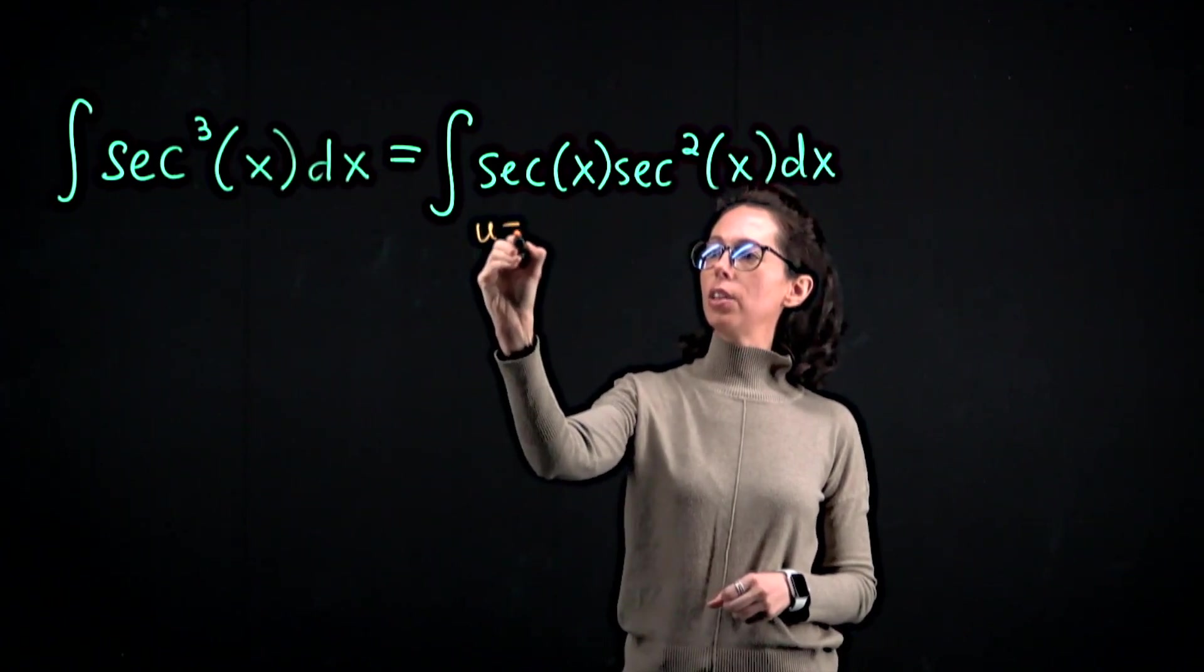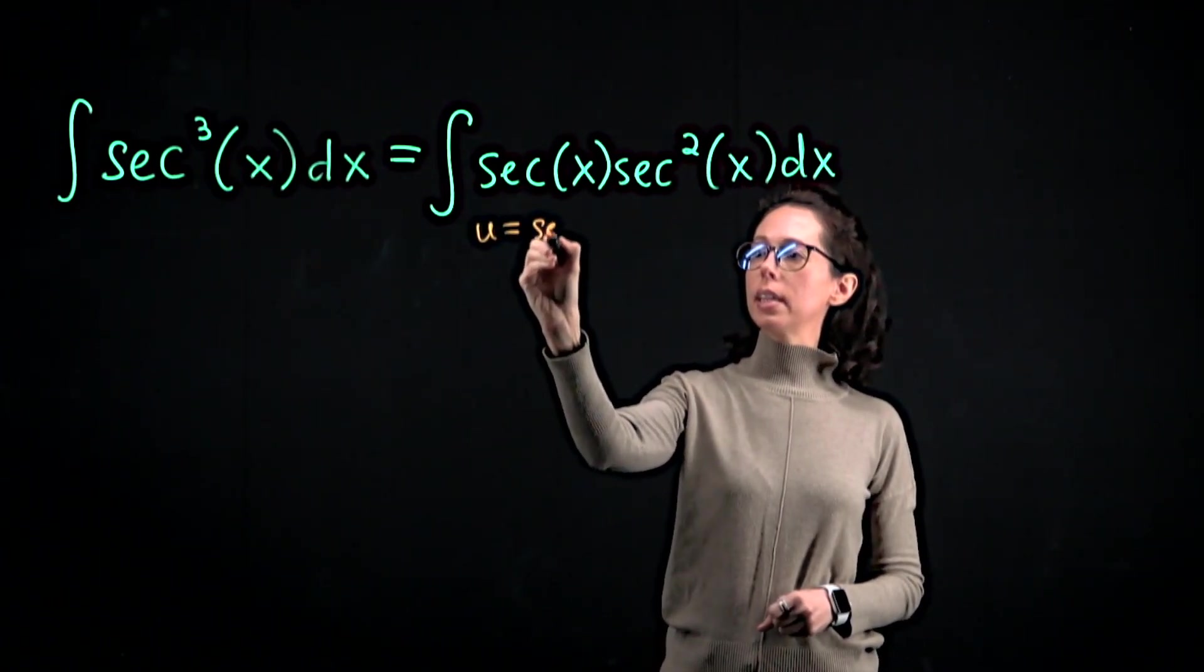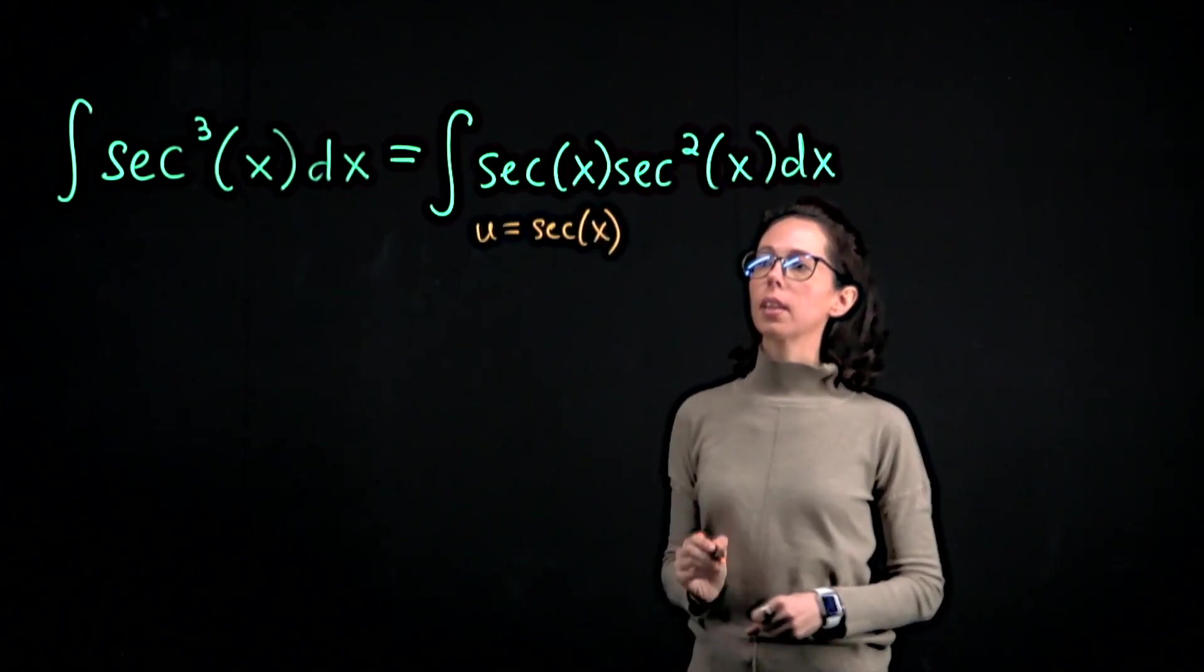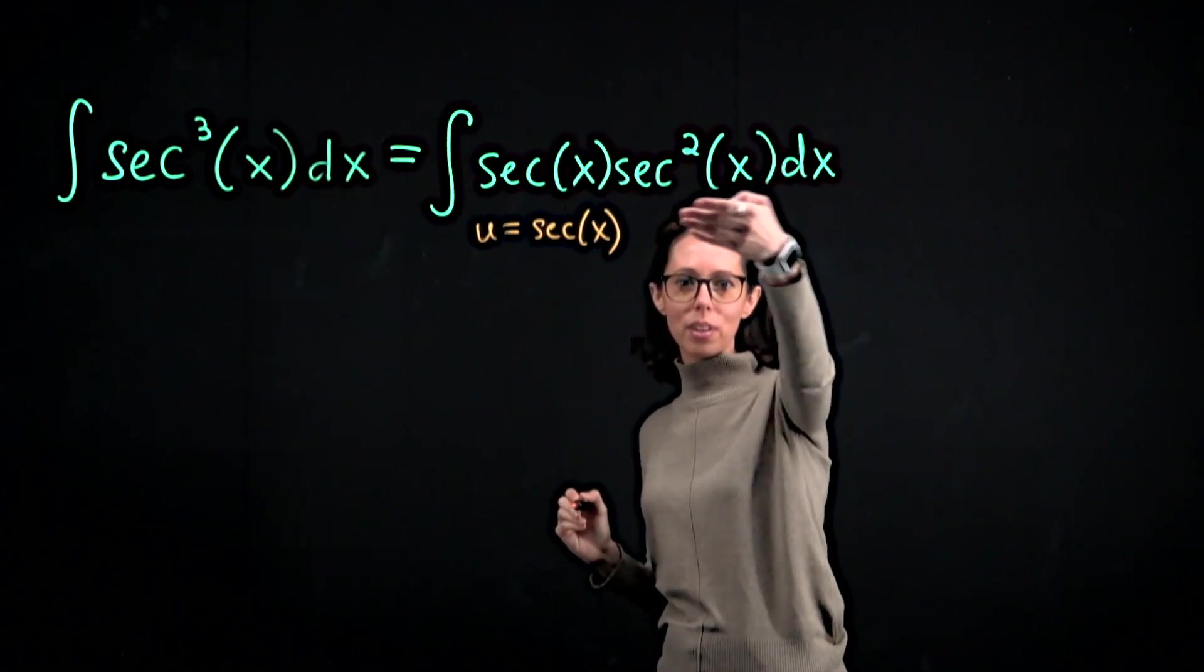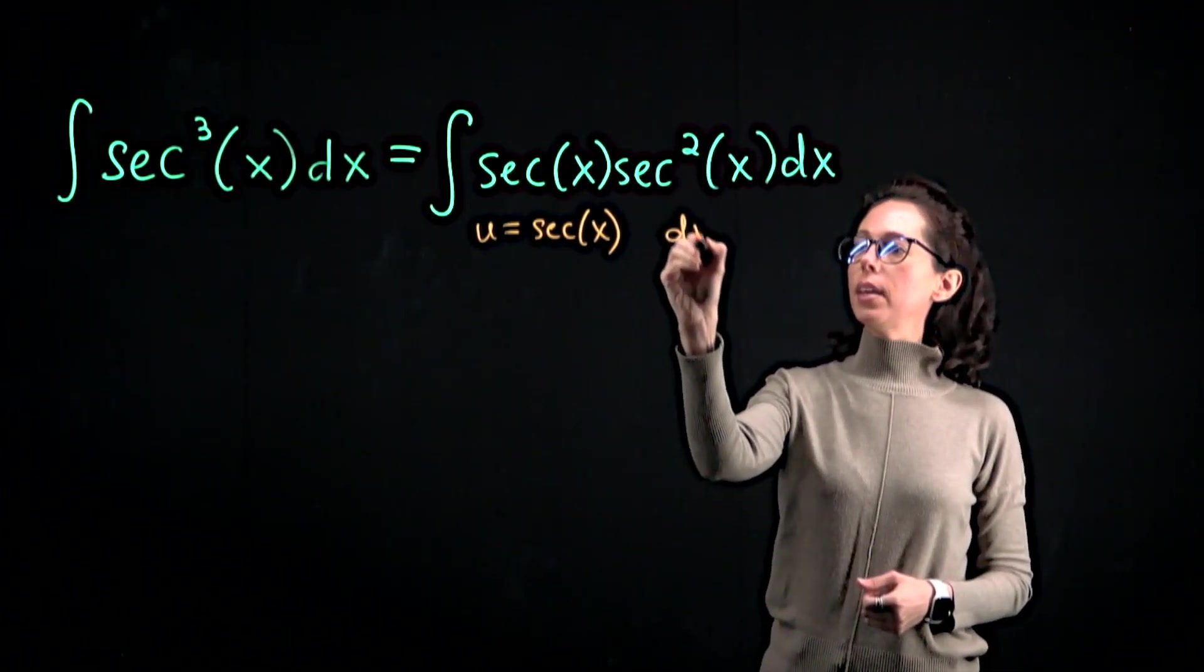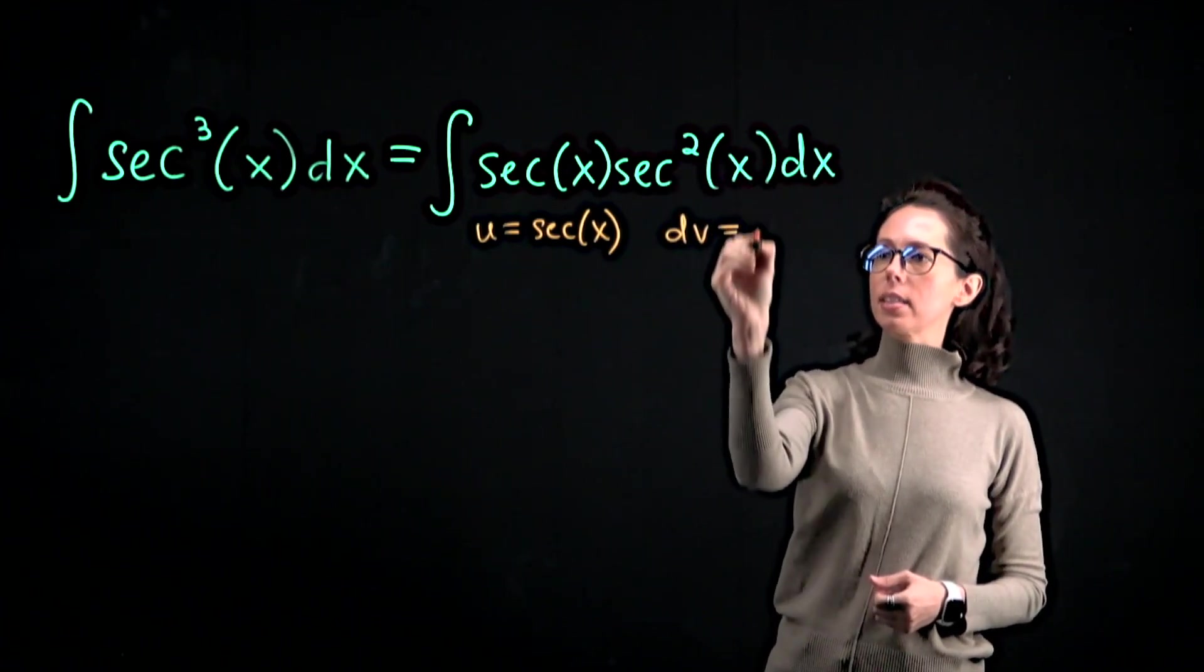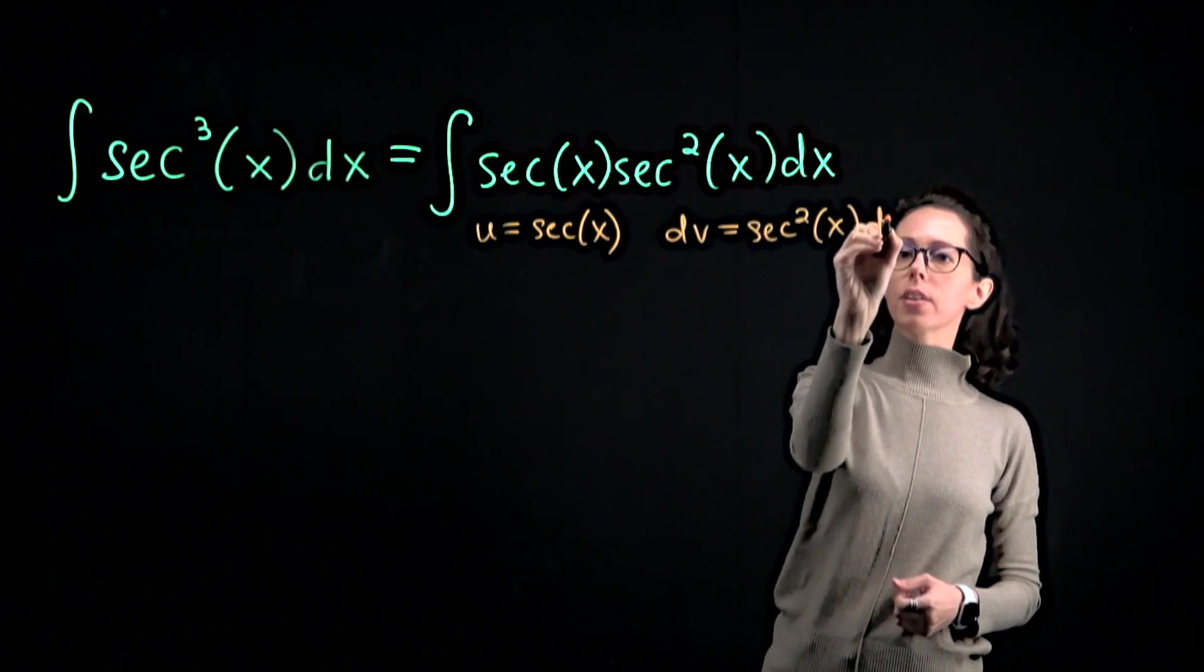We are going to say that u, the function we want to anti-differentiate, is the first one secant of x. And then dv, because we have a nice derivative here, secant squared is the derivative of tangent. We will say that dv is secant squared x dx so that we can apply integration by parts to this integral as we've now written it.